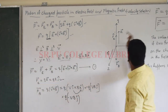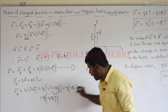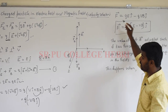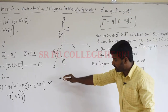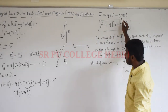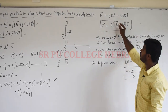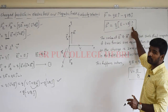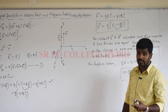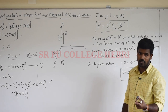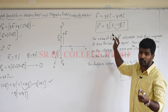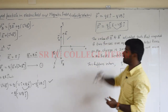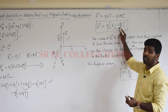Now substituting F_E and F_B into equation 1: F vector = F_E vector + F_B vector. F_E = Q times E j-cap, and F_B = minus Q V B j-cap. Taking Q as common: F vector = Q(E minus VB) j-cap. The expression E minus VB indicates that the electric field and magnetic field are in opposite directions according to the coordinate diagram, which is why we get F vector = Q(E - VB) j-cap.